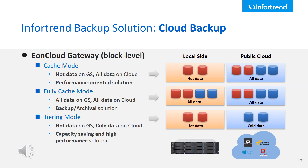Let's discuss EonCloud Gateway's backup policies for block-level mode. To simultaneously achieve backup and fluent data access from the cloud, we recommend using cache mode. This mode keeps hot data at the high-performance local cloud gateway storage while all data is kept on the cloud. If you want to keep the same amount of data at both local and cloud sides, full cache mode is your option. And if you want to save capacity on cloud for hot data, you can use tier mode to keep only cold data on the cloud and hot data on the high-performance local cloud gateway storage. These three different policies provide flexible backup options for different considerations.